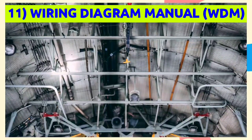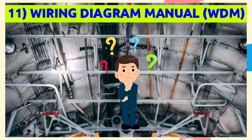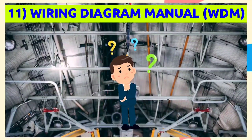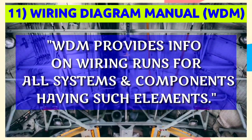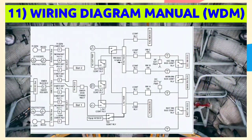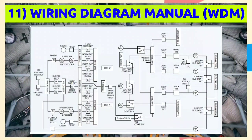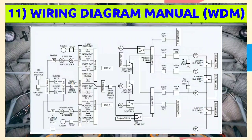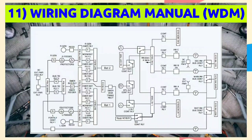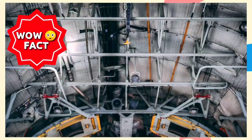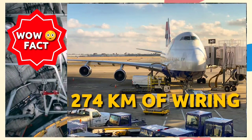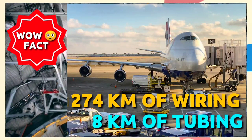Number 11: Wiring Diagram Manual, or WDM. You might wonder — are the SDM and WDM the same? No, there is one major difference. The WDM provides information on wiring runs for all systems and components having such elements. The diagram shows the complete run of wiring, including cable bundle numbers, routing, plug and connector numbers, and location numbers of bulkheads and other structural elements through which wiring is routed. Remarkably, the Boeing 747-400 has 274 km of wiring and 8 km of tubing.